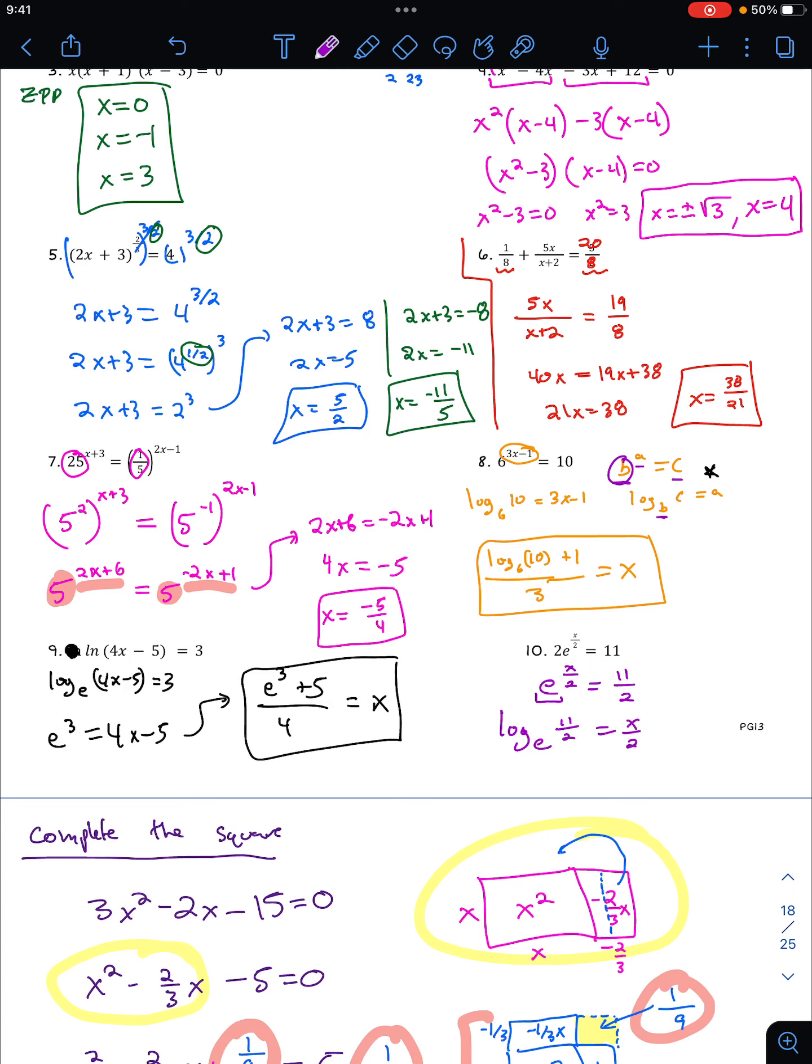So we can now say log base e of 11 halves equals x over two. Log base e is ln, so I can say ln of 11 over two, natural log, and then to isolate x, I would just multiply by two equals x. You could get all fancy and try to power rule this thing. And then, like, you could also write it if you want it as x equals ln of 121 over four, if you were to bring this to the exponent there. But you don't have to. You can just do two times that, and we'll call it good.